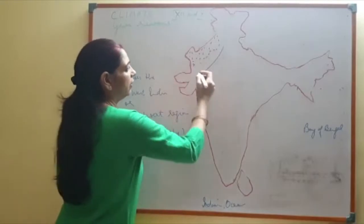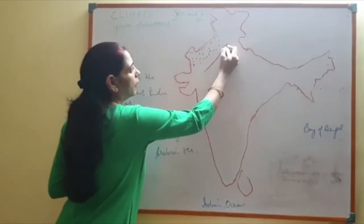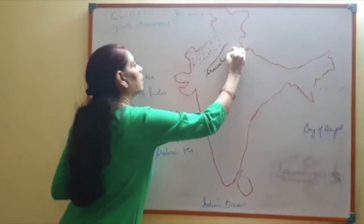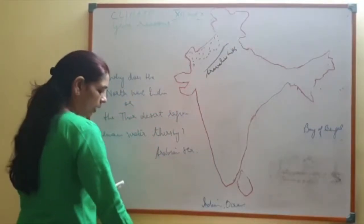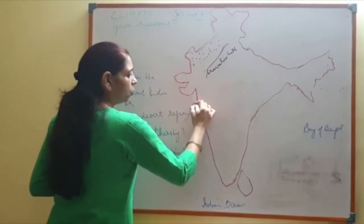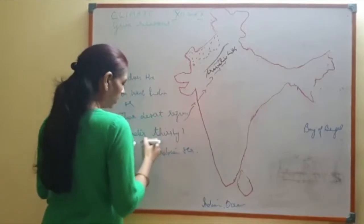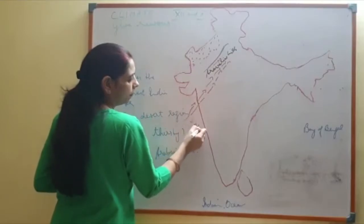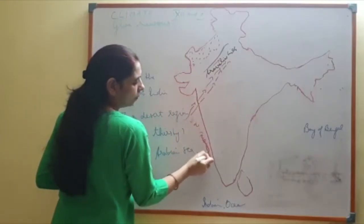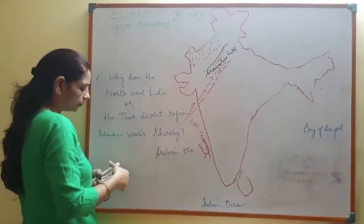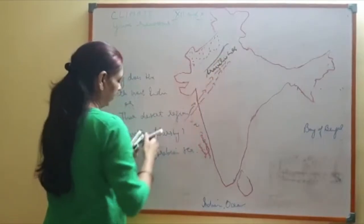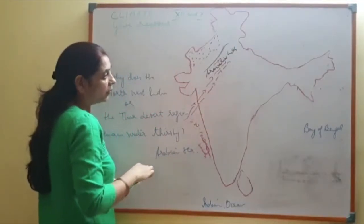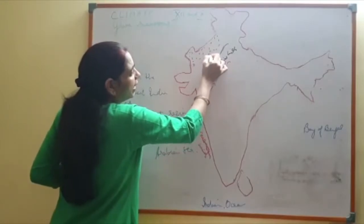The Aravalli Hills are located here. The Southwest monsoon winds — one branch moves parallel to the Aravallis. So when it moves parallel to the Aravallis, it does not bring rain to this part.